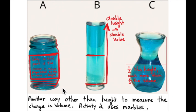You're looking for something proportional — something you're adding to the container that is proportional to the volume. For activity two, they use marbles to do that, and we'll see how that works next.